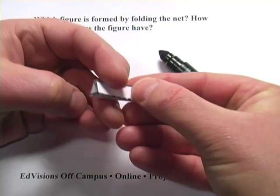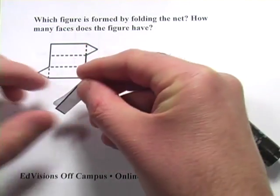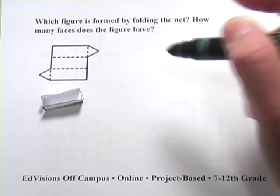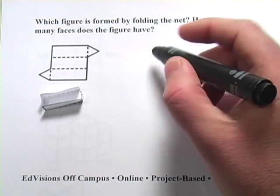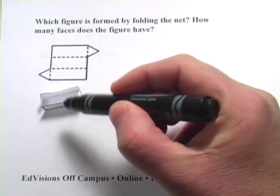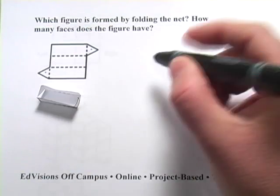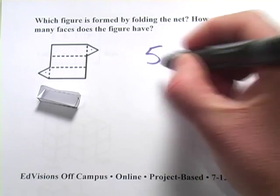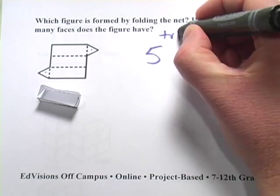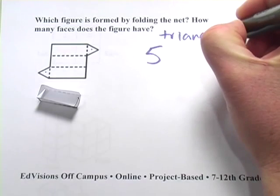So this is a figure that has one, two, three faces, long faces, and then those two faces on the end. So it has five faces. And this is a triangular prism.